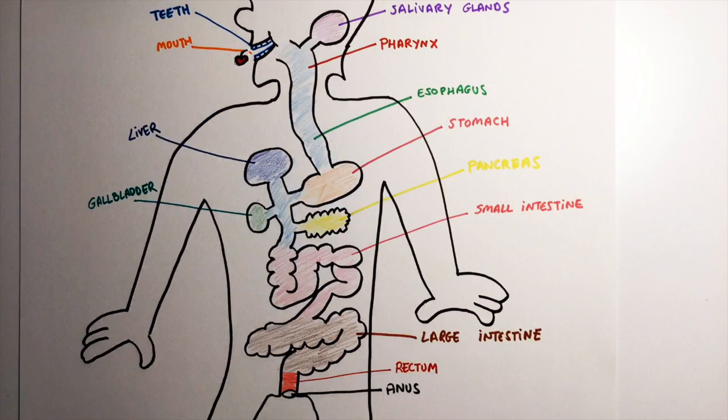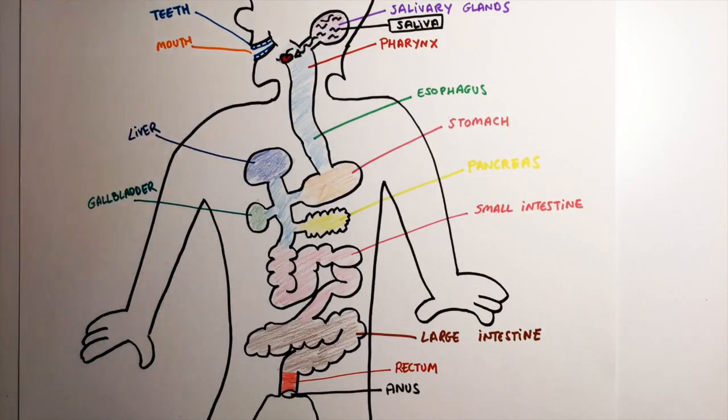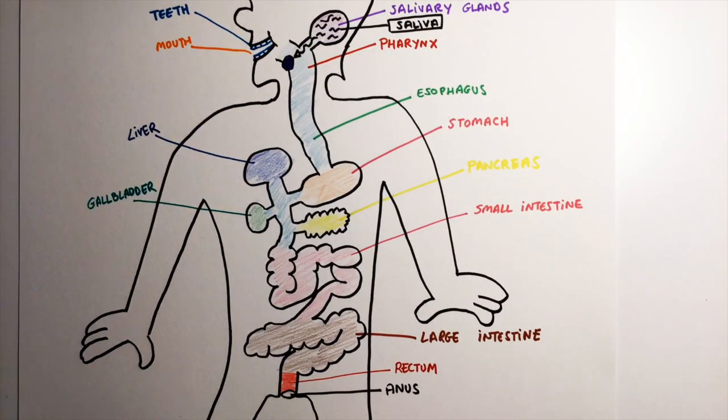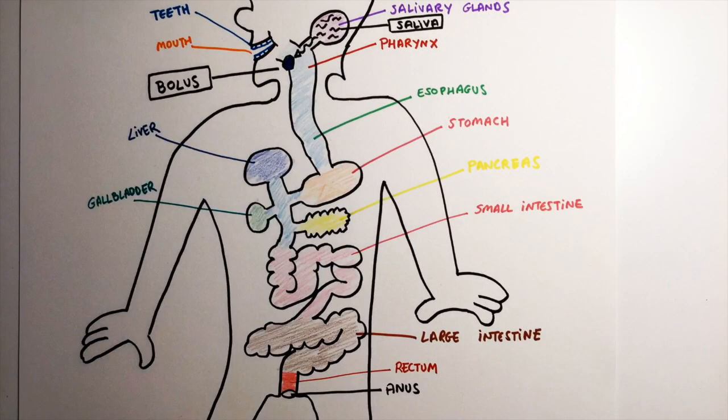The digestion begins in the mouth, where our teeth break down the food. While we chew, the food mixes with saliva produced in the salivary glands. This mixture is called bolus.